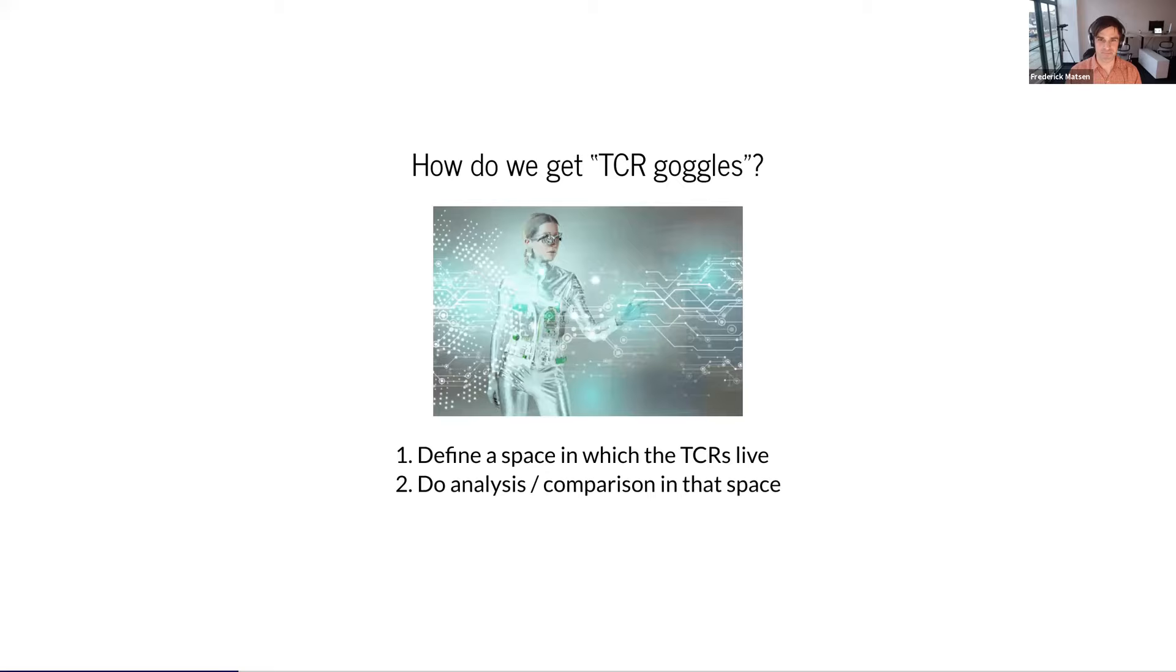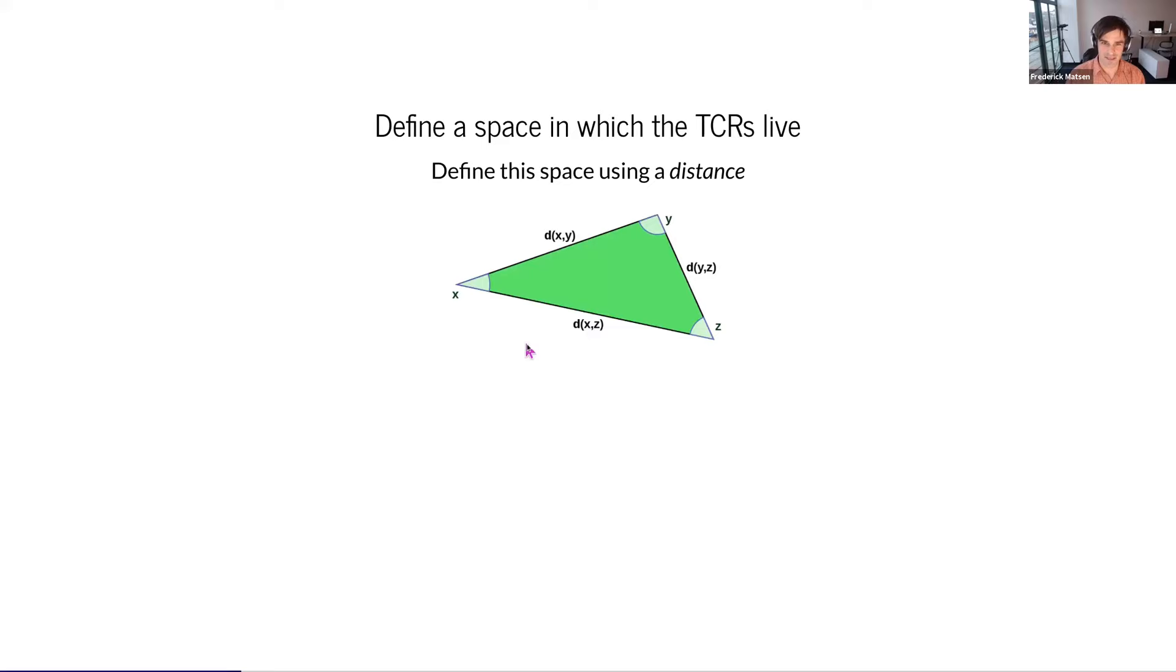How can we get TCR goggles? I'm going to propose that we can define a space in which the TCRs live, and then we can work to do analysis and comparison in that space. We're going to define the space using a distance, where we have a collection of points and distances between them. In our application, these points are going to be TCRs. But I want to emphasize first that this is not points in a Euclidean space. There are no coordinates for each of these points.